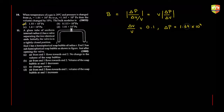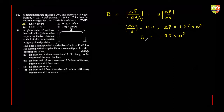1.55. So bulk modulus will be delta P divided by delta V by V, so it will be 1.55 into 10 raised to power 5. That's why option A is correct.